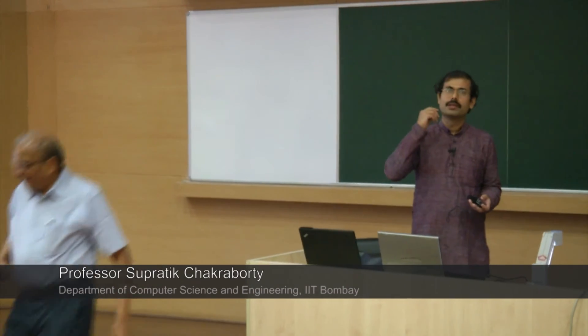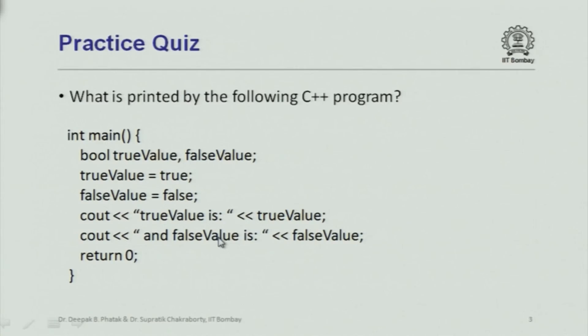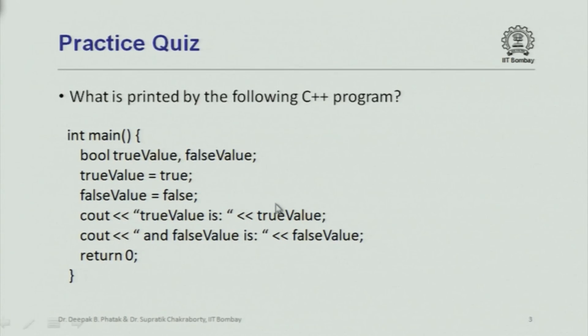However, false will certainly be printed as 0. For true it could be any nonzero integer. But the C++ standard mandates that when you are trying to print out a Boolean value — even if it is internally represented as 139 — when C++ figures out that the variable is declared as Boolean, it will actually print 1.